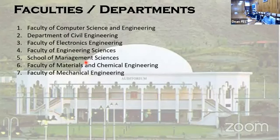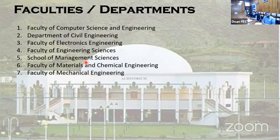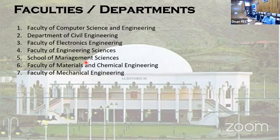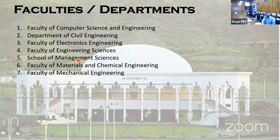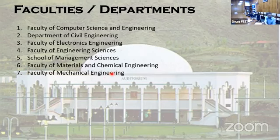These are the seven different faculties and departments at GIK. We have the Faculty of Computer Science and Engineering, a Department of Civil Engineering, a Faculty of Electronics, and the Faculty of Engineering Sciences, which is a very unique faculty — we are the only one in Pakistan offering this program. Recently, we have also been offering degree programs in Management Sciences, as well as Materials and Chemical Engineering, and Mechanical Engineering.